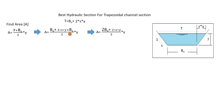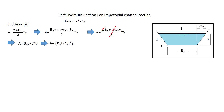After simplification, we get (2b₀ + 2sy) / 2 × y. The twos cancel, giving us A = b₀·y + s·y². Taking y as a common factor, it becomes A = (b₀ + sy)·y. That is the area formula for a trapezoidal channel.